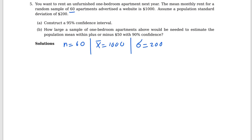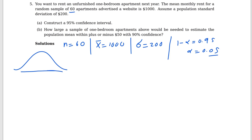Part A asks for a 95% confidence interval. That means 1 minus alpha equals 0.95, so alpha equals 0.05. We can find z-star from the normal curve: the middle area is 0.95, each tail is 0.025. From the z-table, z-star is 1.96 positive and negative 1.96.